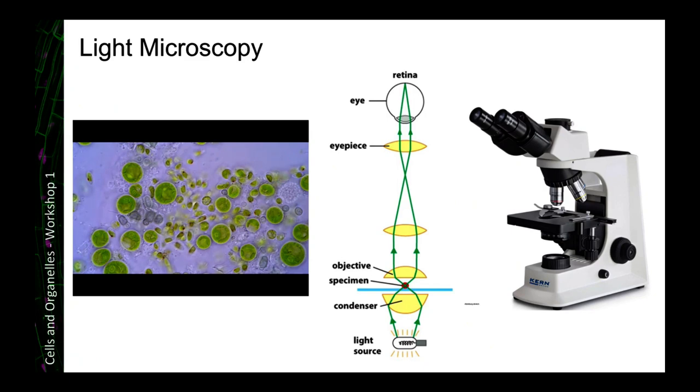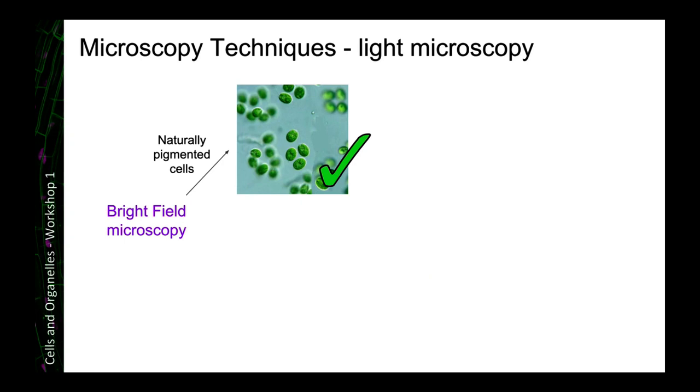But light microscopy has a bit of a disadvantage just in the way that we set it up as standard. So the standard settings for light microscopy are called bright field microscopy. And that's great for looking at naturally pigmented cells. So if your cells have already got something that's coloured in there, it might be chlorophyll that appears green, or it might be another pigment, then you can get really nice images on bright field microscopy.